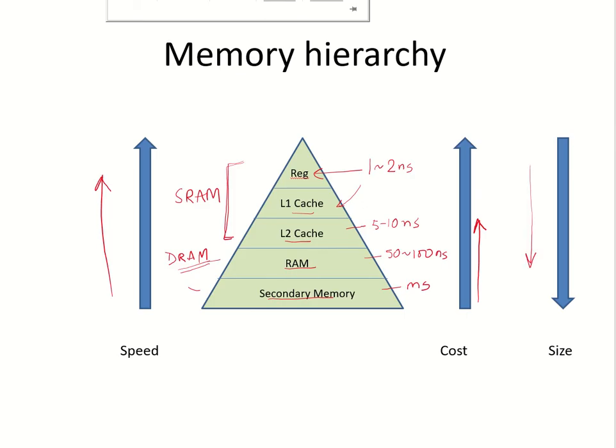The size of the storage elements increases as we go down this memory hierarchy. So while the registers, the general processor registers would be fewer in number and they would be limited, the L1 cache and L2 cache could be of the order of kilobytes, or L2 cache could be of the order of megabytes. The RAM would be in gigabytes, whereas secondary memories could be in terabytes.